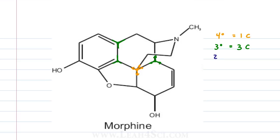Let's move down to secondary carbon atoms. Now we have the ones that appeared tertiary but one of the bonds is to a non-carbon heteroatom like oxygen or nitrogen. So we have one, two, three, four, five, six, seven, eight, nine — oops, that's not secondary because it's a bond to nitrogen — ten, eleven. That's eleven secondary carbons.